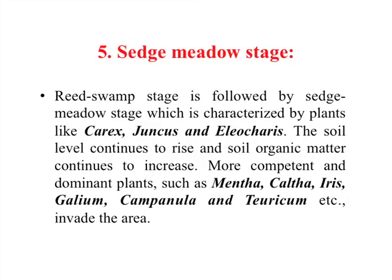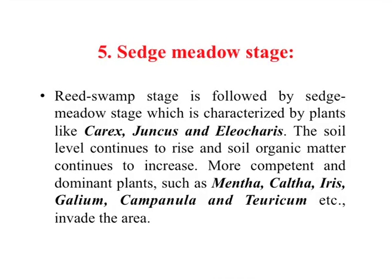The fifth stage is the sedge meadow stage, which follows the reed swamp stage. Examples include Juncus, Carex, and others. Soil organic matter continues to increase at this stage. Examples of plants in the sedge meadow stage are Mentha, Iris, Galium, Campanula, and Pteridium.